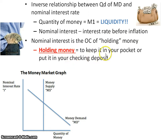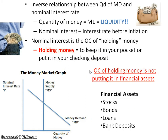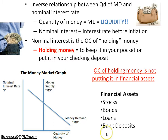When we talk about holding money, this is when you're either keeping it in your pocket or you've got it in your checking account or checking deposit. The opportunity cost of holding money is not putting it into different financial assets. In macro, you will be expected to know the different financial assets: stocks, bonds, loans, and bank deposits. These are all areas where somebody could put their money instead of holding onto it.